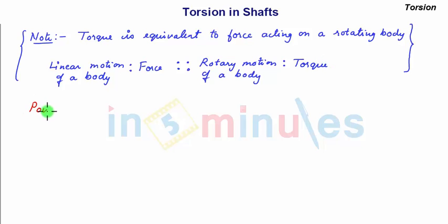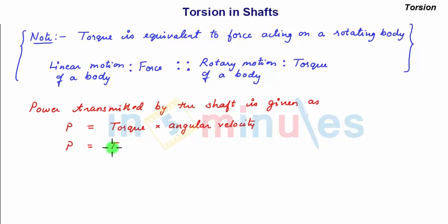Also, the power transmitted by the shaft is given as power P equal to torque into angular velocity. So P is equal to T into omega. So your omega is written as 2π n by 60.